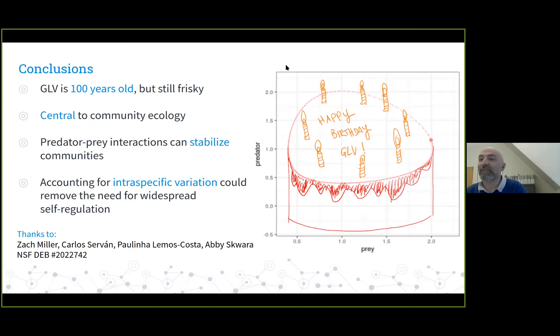That's what I'm working on right now, and this leads to my conclusion. The Lotka-Volterra model is a hundred years old but still frisky to some extent. It's played a central role in community ecology. As I showed you, predator-prey interactions have some sort of stabilizing effect in the sense that we need less self-regulation to stabilize this community. However, we still need widespread self-regulation. To get out of this pickle, I think one of the most promising strategies is to account for this intraspecific variation that could remove the need for widespread self-regulation. With that, I'd like to thank the members of my laboratory, my collaborators Zach, Carlos, Paulina, and Abby. I'd like to thank the National Science Foundation for funding, and I'd like you to join me in wishing a happy birthday to the Generalized Lotka-Volterra model and a hundred years of successes.